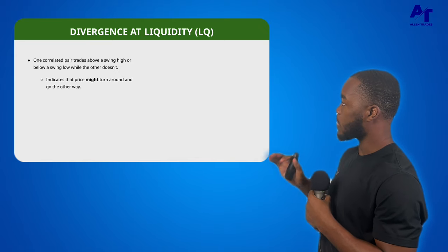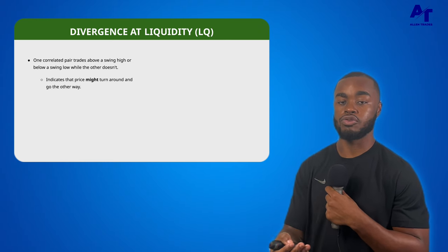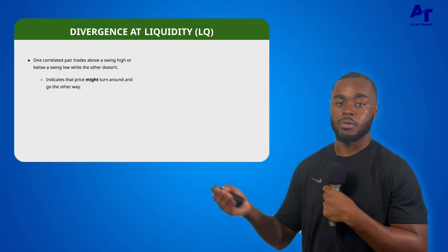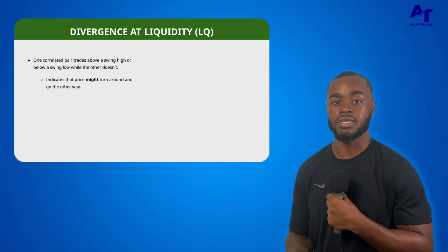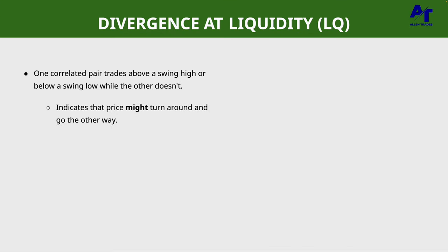Now let's talk about divergence at liquidity. Remember how correlated markets like Euro and Pound usually trade in the same direction — they should take out highs and lows at the same time and attack liquidity together. However, when one correlated pair doesn't trade above a swing high or below a swing low while the other does, that is divergence at liquidity. This may indicate that price might turn around and go in the opposite direction. It's not 100% guaranteed, but it puts our antennas on alert that we might be changing direction.